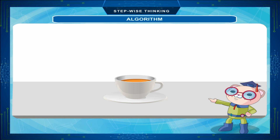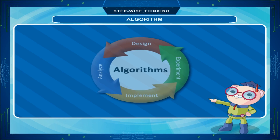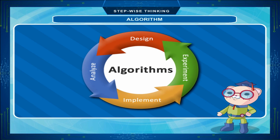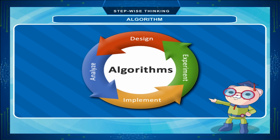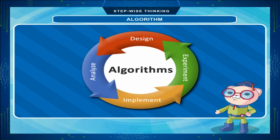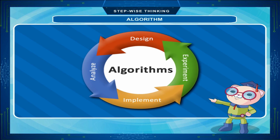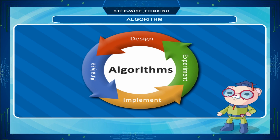This set of steps to solve a problem is called an algorithm. This technique of solving a problem makes programming easy. Algorithm is very similar to daily tasks written in a diary with proper sequence and time. This technique is supplemented by another technique called flowchart.